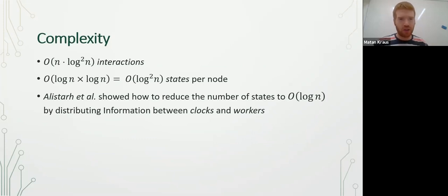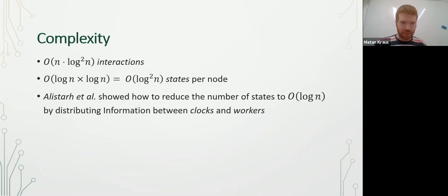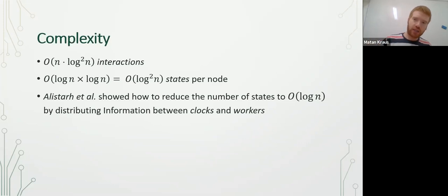The complexity of this protocol is O(n log² n) interactions since we have n nodes, each with log n phases and log n steps per phase. The number of states per node is a Cartesian product of the log n phases and log n steps, yielding O(log² n) states per node. Alistar et al. showed a method to reduce the number of states to O(log n) by dividing the population into clocks and workers, where clocks are responsible for the steps in the phase and workers only need to count the phases.